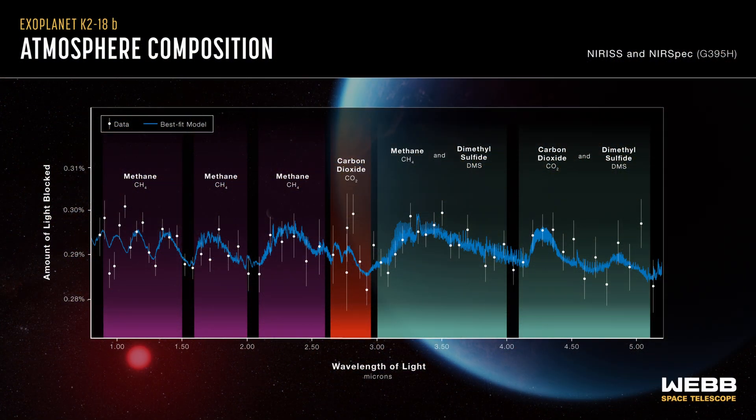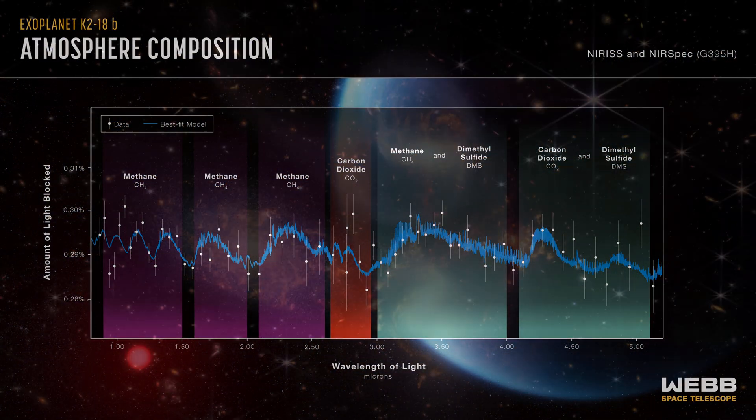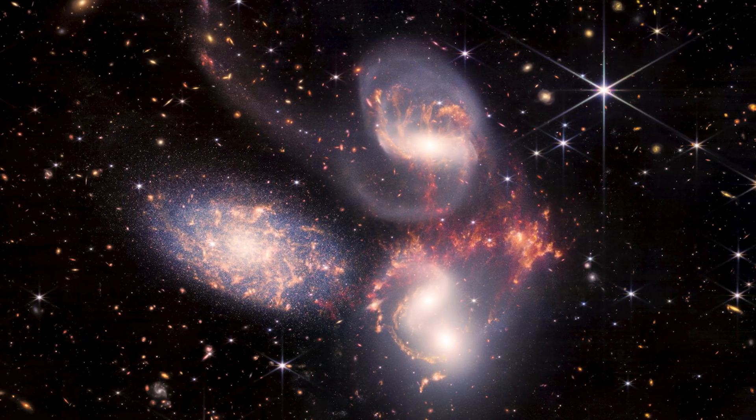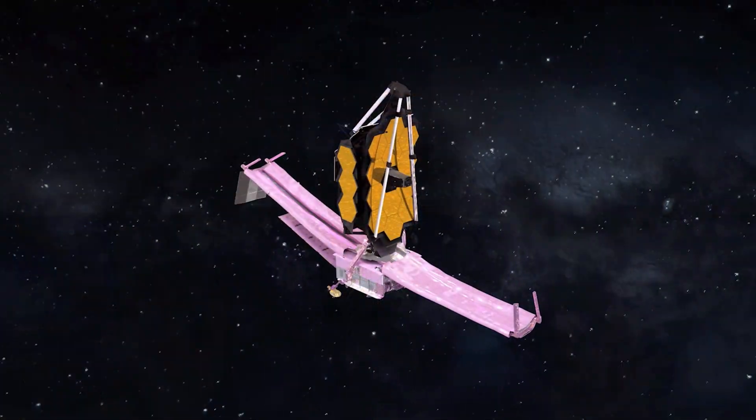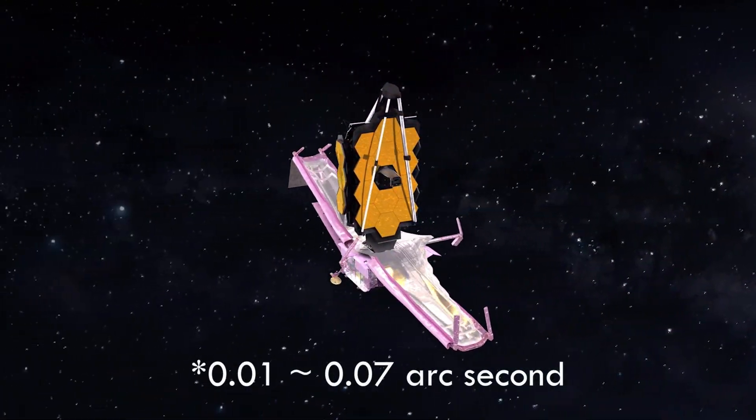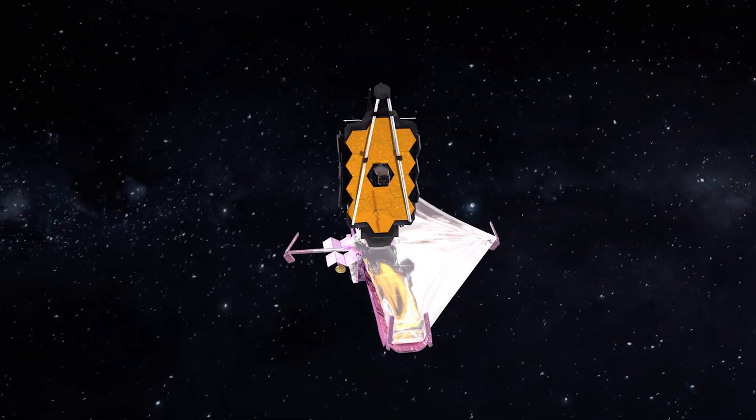Study the composition of exoplanets' atmospheres and glimpse the faint glimmers of the universe's early galaxies. Webb, by contrast, operates in 0.1 to 0.7 arcsecond diffraction-limited resolution at 2 microns.